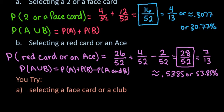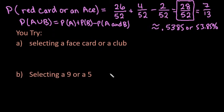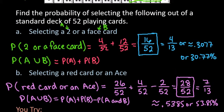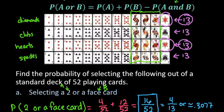Now I want you to try two problems on your own to make sure you understand how to do it. Find the probability of selecting a face card or a club, and also the probability of selecting a 9 or a 5. Go ahead and write those down. I'll show the card distribution visual again if you need it. Pause the video and try the two problems.